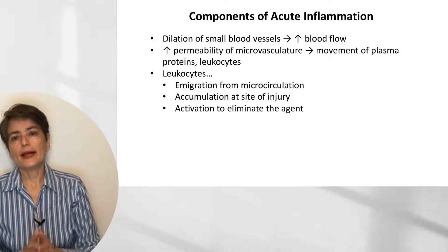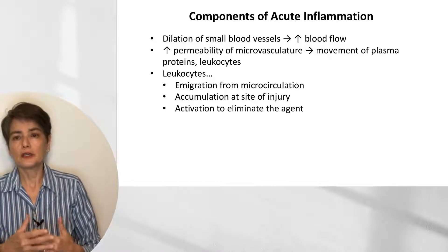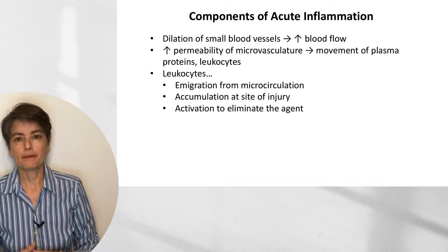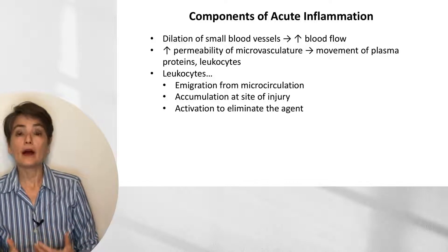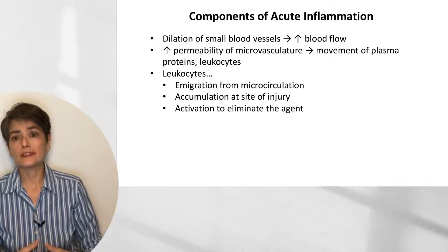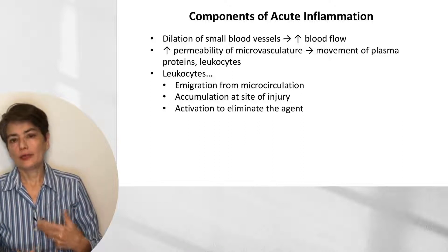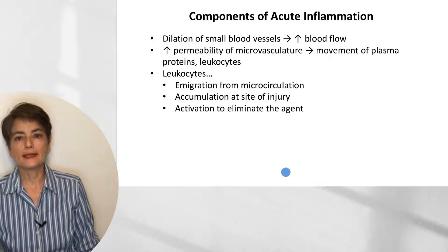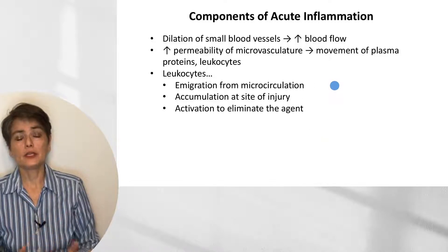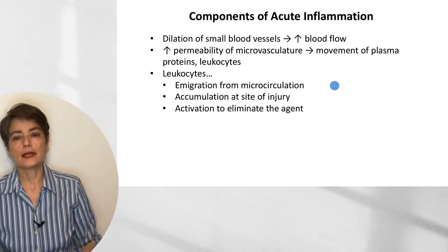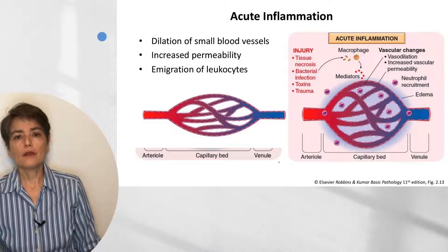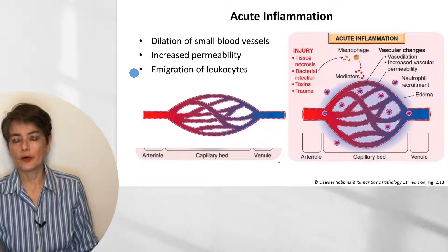Acute inflammation has some characteristic components. One is the dilation of small blood vessels, which increases blood flow, causing erythema and warmth in the area of inflammation. The next is increased permeability of the microvasculature, allowing plasma proteins and leukocytes to exit the vasculature. And then there are leukocytes, which need to leave the microcirculation, accumulate at the site of injury, activate, and eliminate the target. These are the three characteristics: dilation of small blood vessels, increased permeability, and emigration of leukocytes.